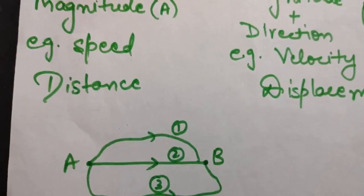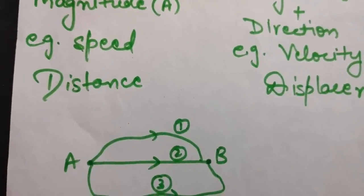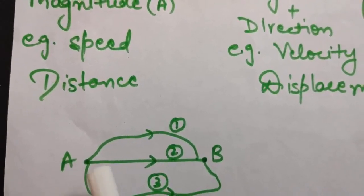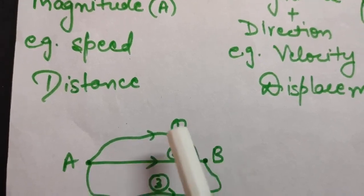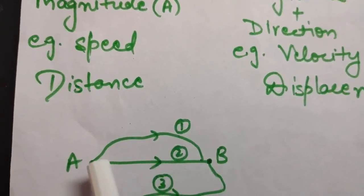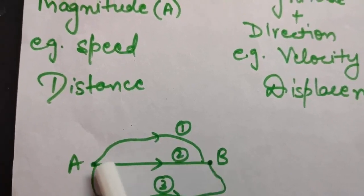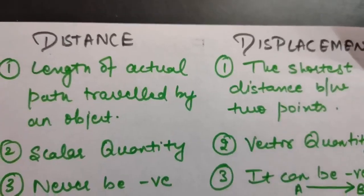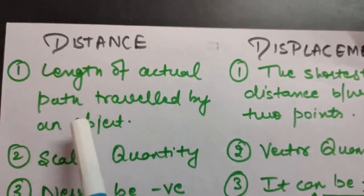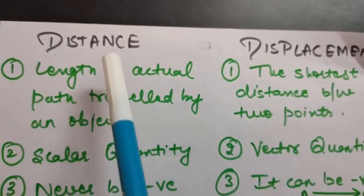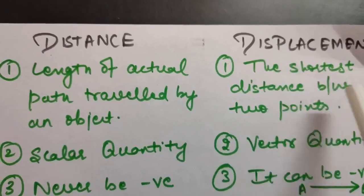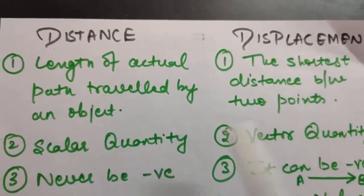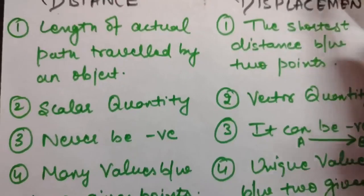If I ask what is the displacement from point A to B, displacement is the shortest distance between A and B. Out of all three paths, the second is the shortest, so that is the displacement. The length of the actual path traveled is called distance, whereas the shortest distance between two points is called displacement. Distance is a scalar quantity and displacement is a vector quantity.